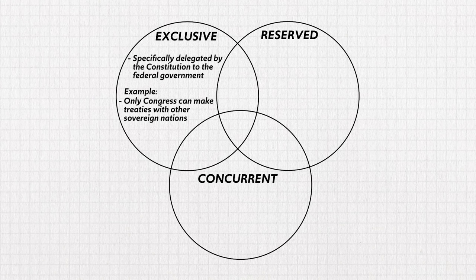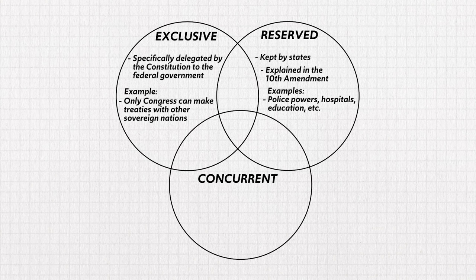Reserved powers are those kept by the states, explained in the Tenth Amendment: 'The powers not delegated to the United States by the Constitution nor prohibited by it to the states are reserved to the states.' Traditionally these have included things like police powers, hospitals, and education. Concurrent powers are shared by both the federal and state governments — for example, both the federal and state governments pull taxes from your income.